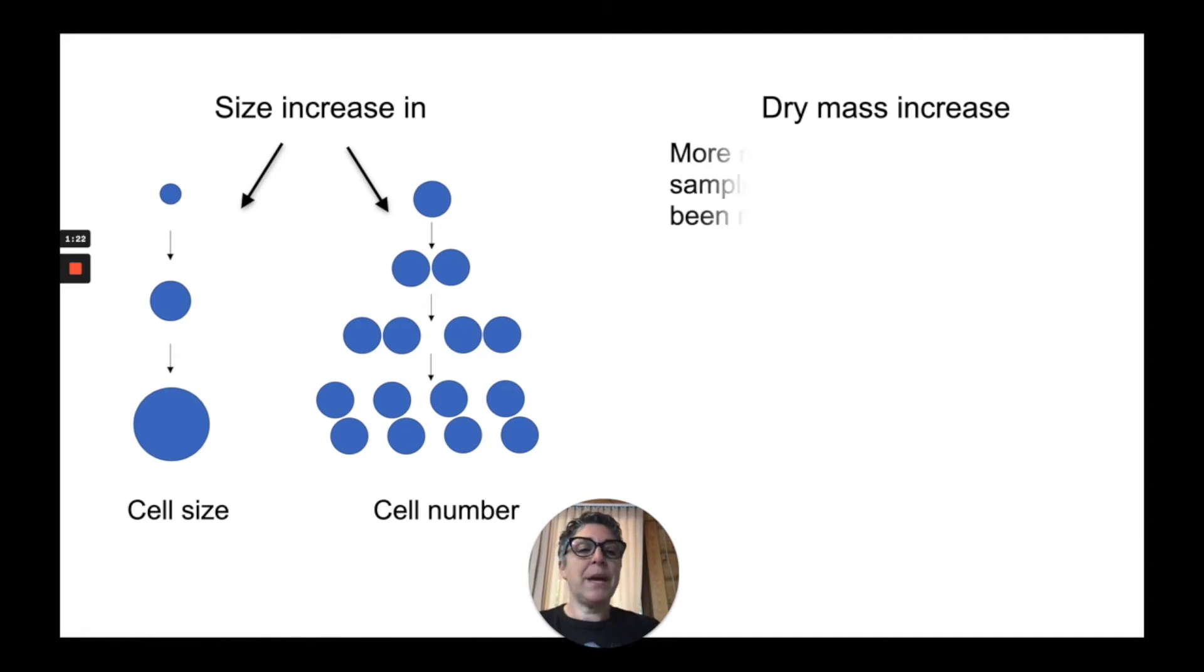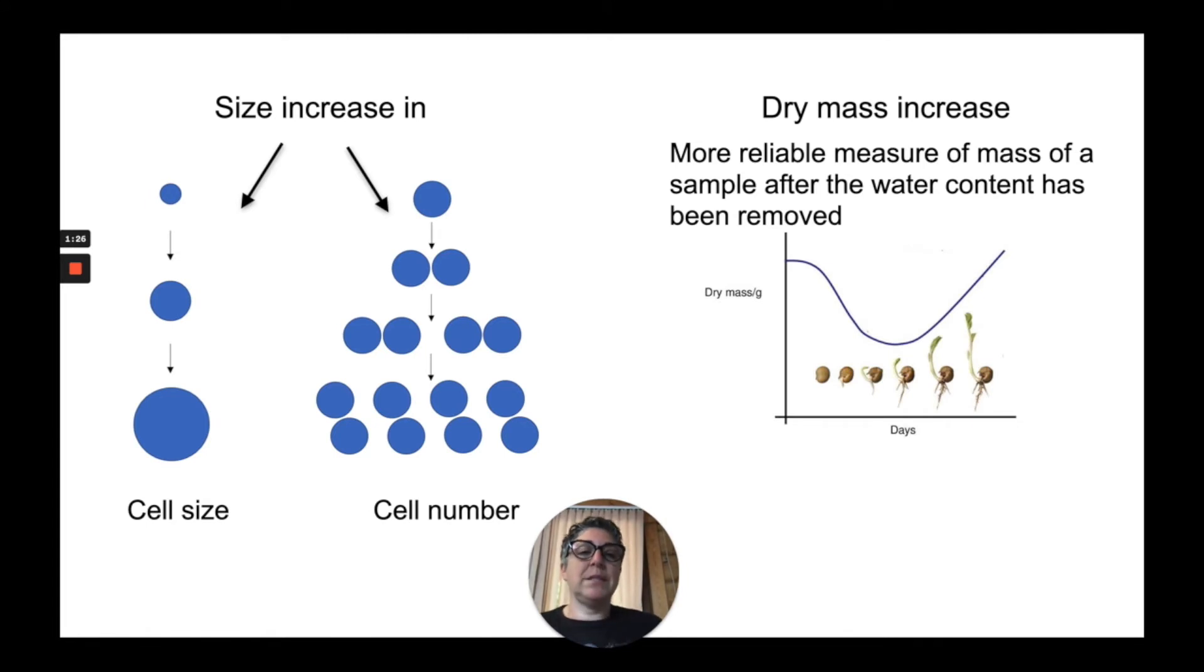Dry mass increase is a more reliable measure of mass of a sample after the water content has been removed. So we're just looking at the components of the cell without water. You can typically see this in graphs.